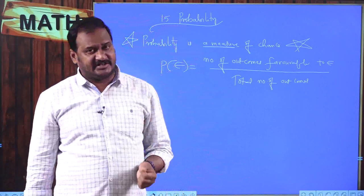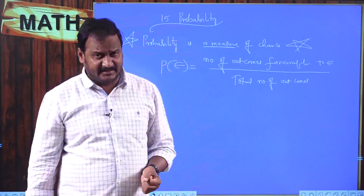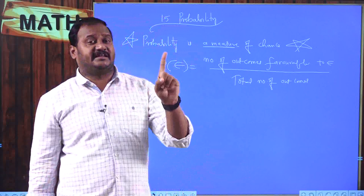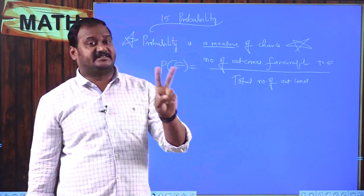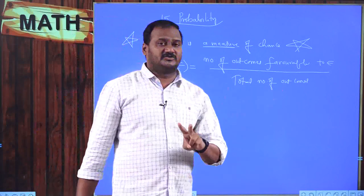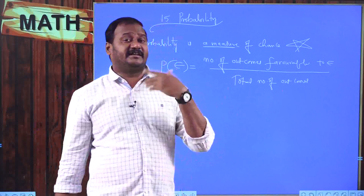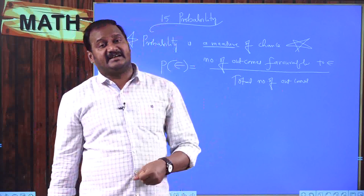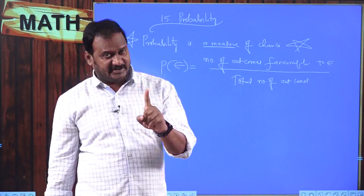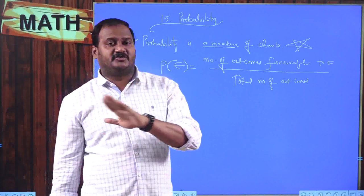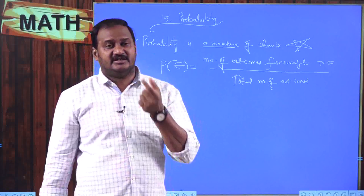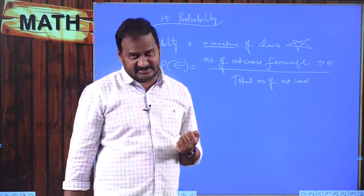For example, when I am tossing a coin, I might get head or tails. Total number of outcomes are tails as well as heads, so total number of outcomes is equal to 2. What is the probability of getting head? There is only one head on a coin, so 1 divided by 2, which is 50 percent.